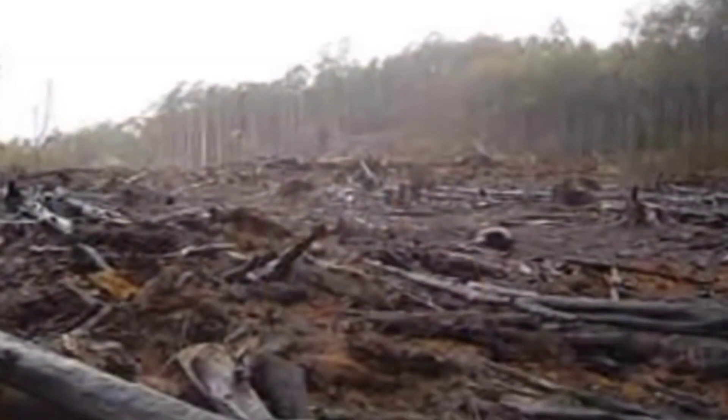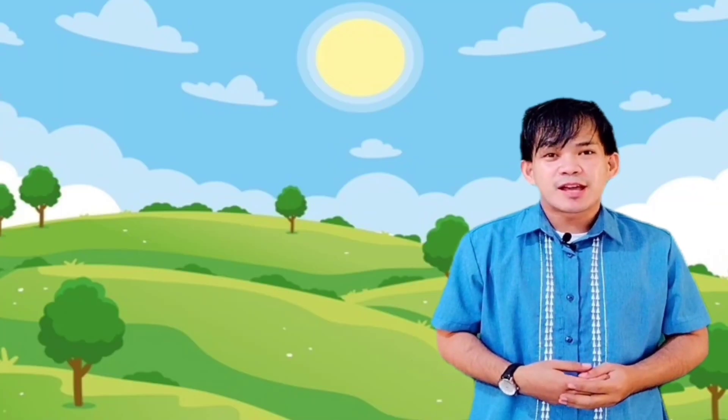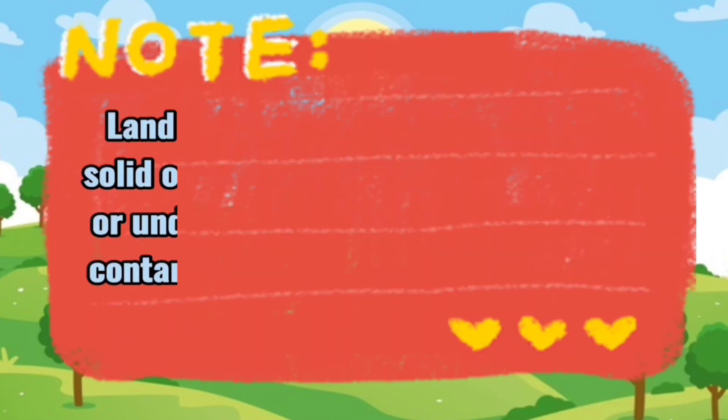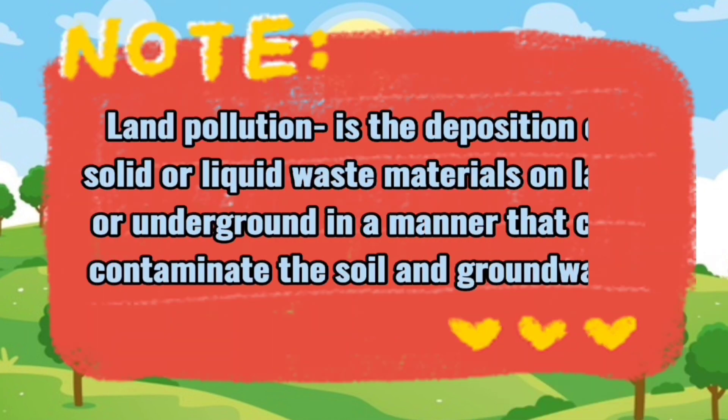If people continuously throw waste on land surfaces and pollute them, will it make change? Yes, it will become land pollution. Land pollution is the deposition of solid or liquid waste materials on land or underground in a manner that can contaminate the soil and ground water.